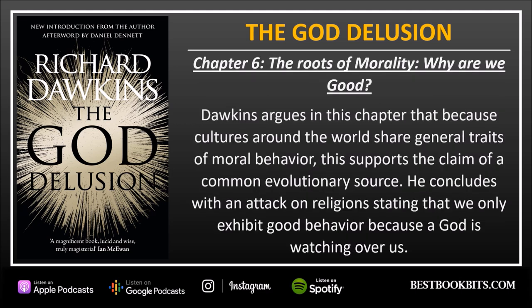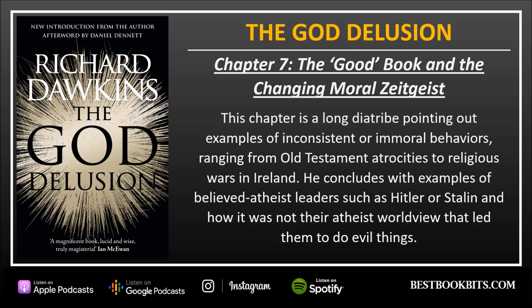Chapter 6: The Roots of Morality — Why Are We Good? Dawkins argues that because cultures around the world share general traits of moral behavior, this supports the claim of a common evolutionary source. He concludes with an attack on religion, stating that we only exhibit good behavior because a god is watching over us. Chapter 7: The Good Book and the Changing Moral Zeitgeist. This chapter is a long diatribe pointing out examples of inconsistent or immoral behaviors ranging from Old Testament atrocities to religious wars in Ireland. He also addresses believed atheist leaders such as Hitler or Stalin and how it was not their atheist worldview that led them to do evil things.